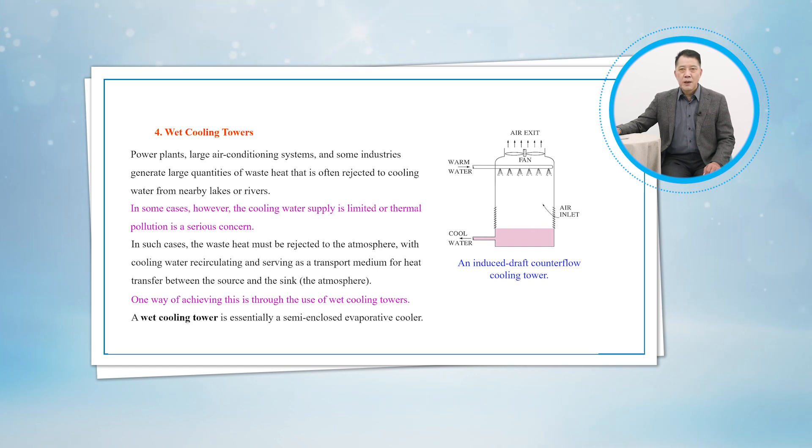The cooled water collects at the bottom of the tower and is pumped back to the condenser to absorb additional waste heat. Make-up water must be added to the cycle to replace the water lost by evaporation and air draft. To minimize water carried away by the air, drift eliminators are installed in the wet cooling towers above the spray section.